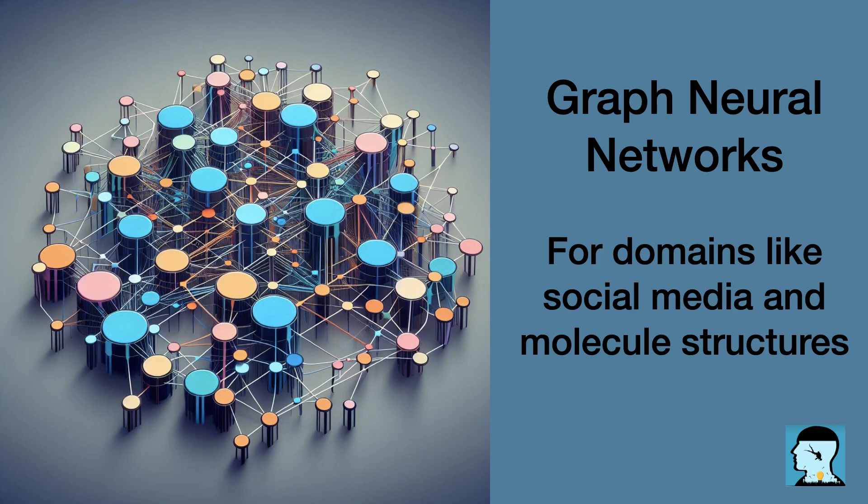Sure. In a graph neural network, information is propagated through the network in a way that's similar to how rumors spread in a classroom. When someone starts a rumor, it quickly spreads to all the other students, and then those students pass it on to their neighbors, and so on. This simultaneous spreading of information is similar to how propagation works in a graph neural network.